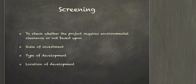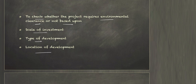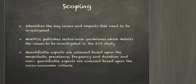The first step is screening. Screening is where we find out whether we have to go through the EIA process or not — it checks whether the project requires environmental clearance. This is based on the scale of investment, how big the project is, the type of development, and the location of the project.